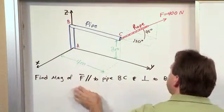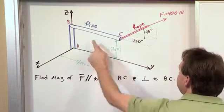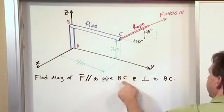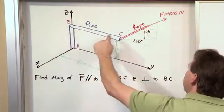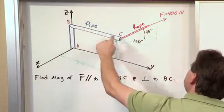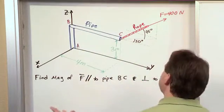What I want to do is find the magnitude of this force parallel to this pipe BC. Notice it says BC. So I want to find out how much of the force lies along parallel to the pipe and also how much perpendicular to the pipe.